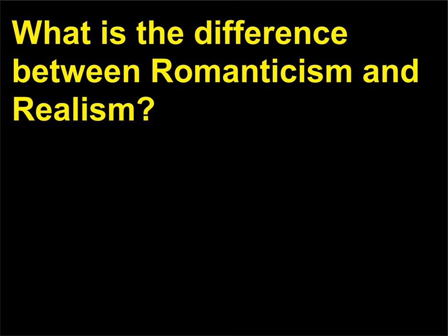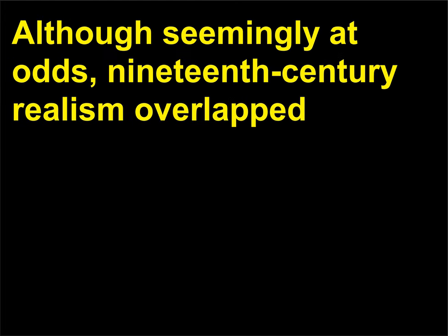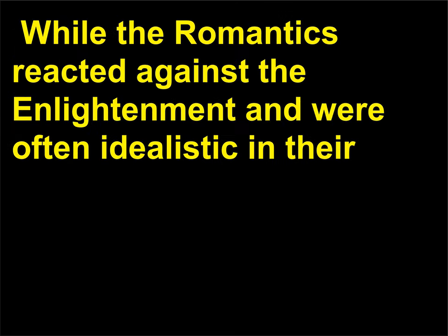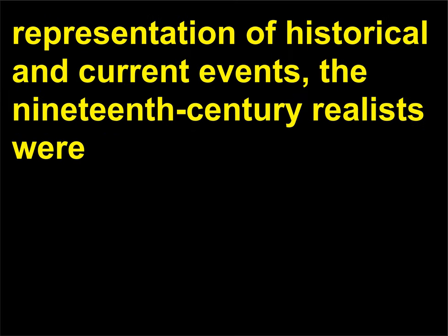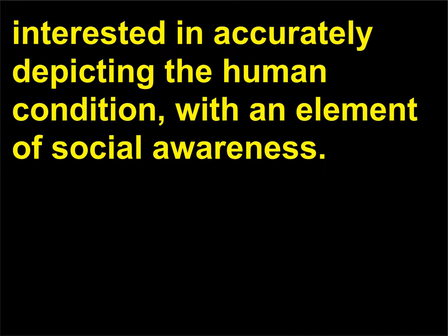What is the difference between Romanticism and Realism? Although seemingly at odds, 19th century Realism overlapped quite a bit with the Romantic movement of the same period. While the Romantics reacted against the Enlightenment and were often idealistic in their representation of historical and current events, the 19th century Realists were interested in accurately depicting the human condition with an element of social awareness.